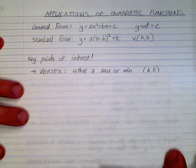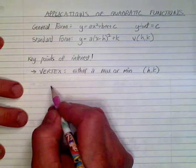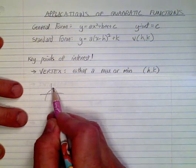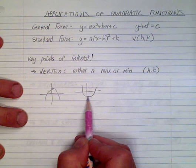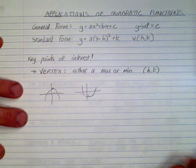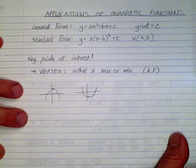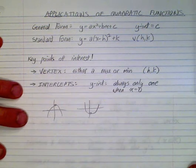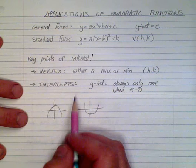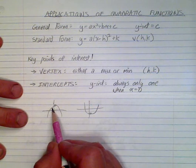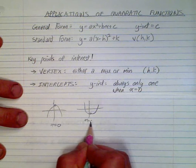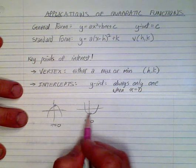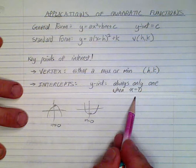The first key point is the vertex — it is the max or min value. If it opens down, it has a maximum value; if it opens up, it has a minimum value. That vertex is always (h, k). The y-intercept is always just one — it always crosses the y-axis once, and that's where x equals 0. Always find it by making x equal to 0.